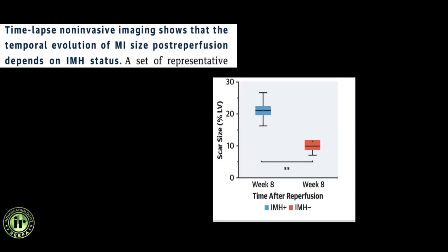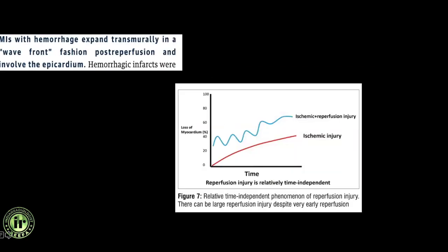Time-lapse non-invasive imaging shows that MI size post-reperfusion depends on IMH status — scar size was significantly higher at eight weeks in patients with IMH. More scar means greater arrhythmia risk and worse clinical outcomes. Patients with myocardial hemorrhage had transmural infarction expansion in a wavefront fashion — a time-dependent vicious cycle where compression and vasospasm from hemorrhage repeatedly re-trigger ischemia and reperfusion injury.